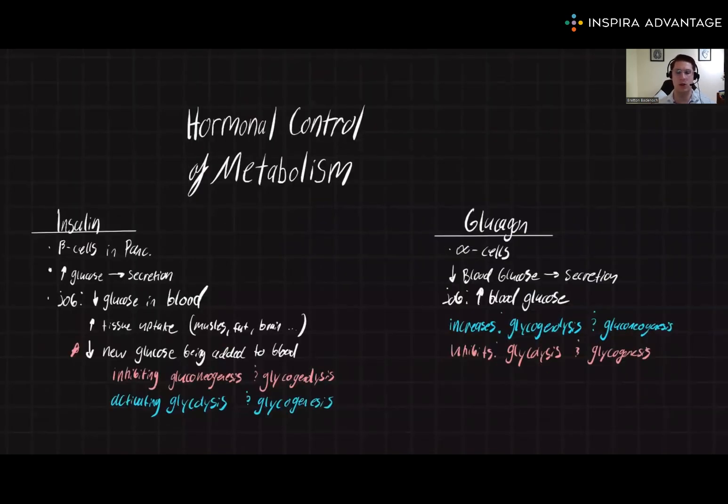These are the important relationships you will need to know to do well on the MCAT. If you can remember that the role of insulin is to reduce the level of blood glucose and that glucagon is to increase the amount of blood glucose, you can then logically figure out what will be happening with glycolysis, glycogenesis, glycogenolysis, and gluconeogenesis.